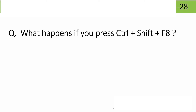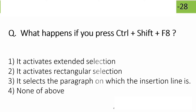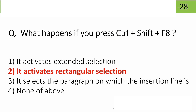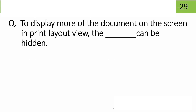What happens if you press Ctrl+Shift+A? The correct answer is that it activates a rectangular selection mode in the document.